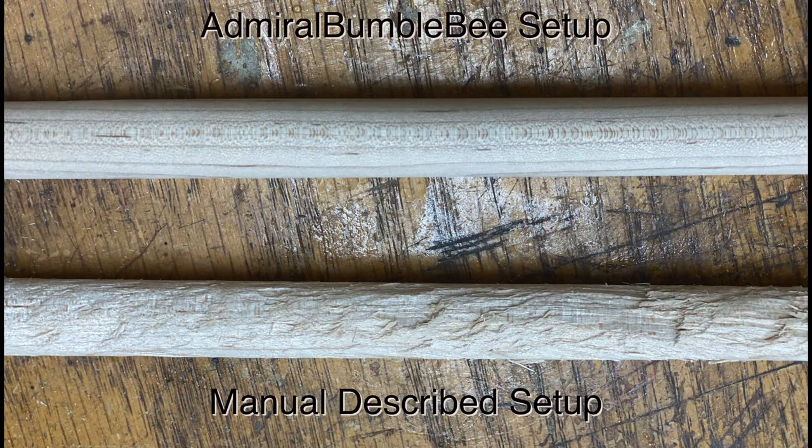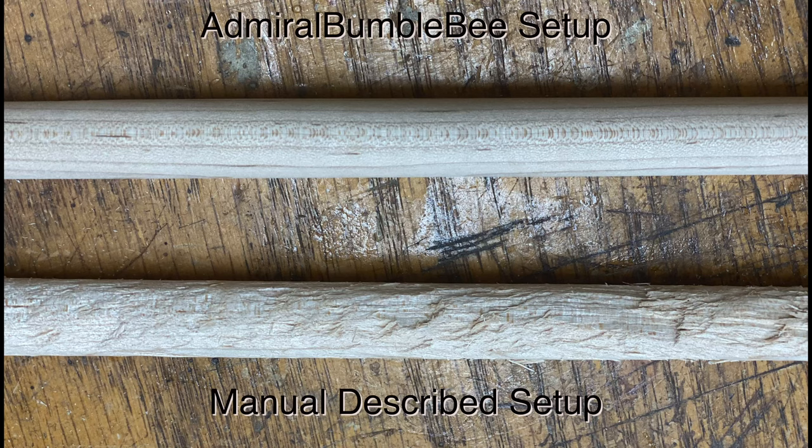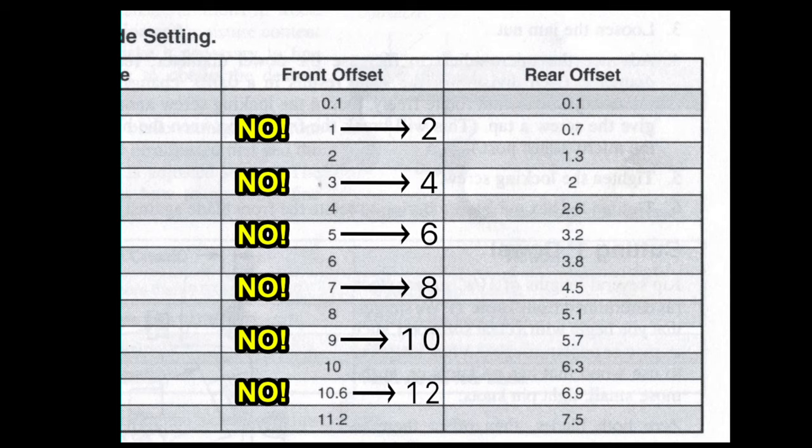My setup was clearly easier to execute, but the results speak for themselves. When you set this up the way that I'm about to describe, everything works way better for any type of wood. And my setup couldn't be any simpler. Look in the manual and for any odd number front offset, increase it to the next size.